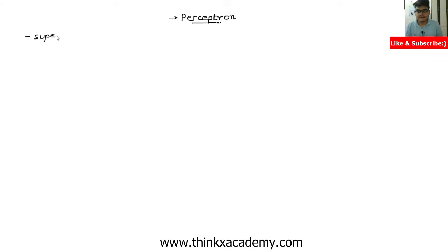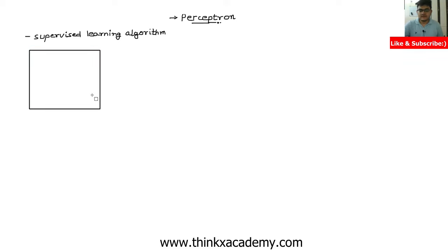So what is a Perceptron? A Perceptron is a supervised learning algorithm, which basically means that we are given a data set in the form of features and we also have a mapping. We have already discussed this data set in the previous tutorials of linear regression, logistic regression, etc. So for every value of X, I have a mapping to Y. Perceptron is a supervised learning algorithm because we have a supervision of some output mapping.